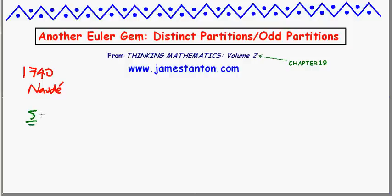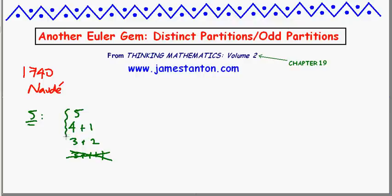Take a number like 5. How many ways could I break down 5 as a sum of distinct positive counting numbers? For example, I could just write 5 all by itself, or 4 plus 1, or 3 plus 2. I could also write 3 plus 1 plus 1, but 'distinct' means no repetition — no repeating a number. There are actually just three ways to write 5 as a sum of distinct numbers, so D(5) = 3.